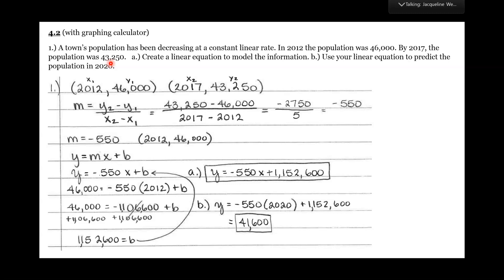Remember, the population depends on the year. So our year will be independent — the x value — and our population will be dependent — the y value. We've got our two ordered pairs, so let's go ahead and find our slope. Slope is y2 minus y1 over x2 minus x1, and that gives us a slope of negative 550.